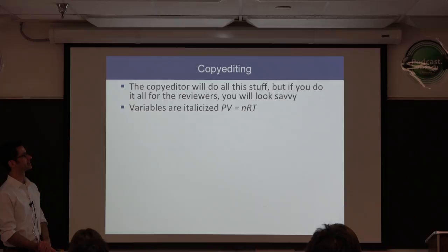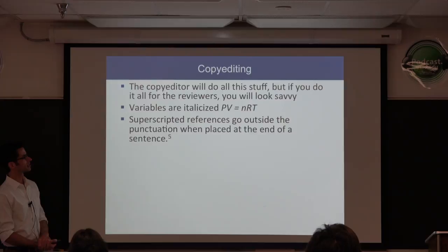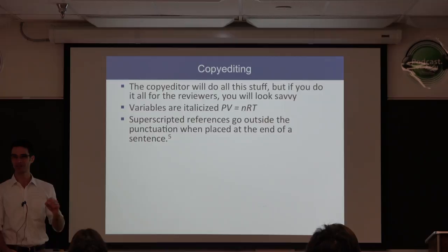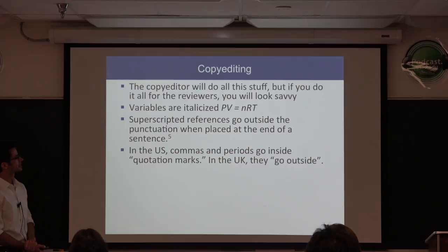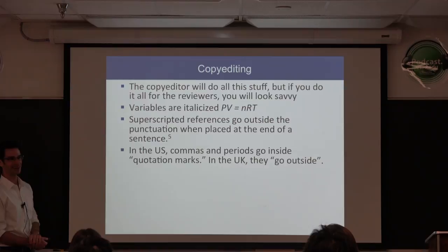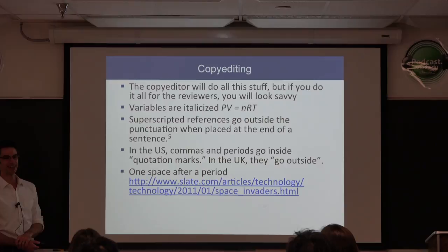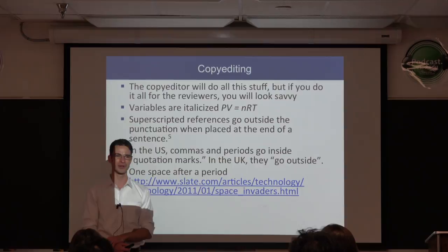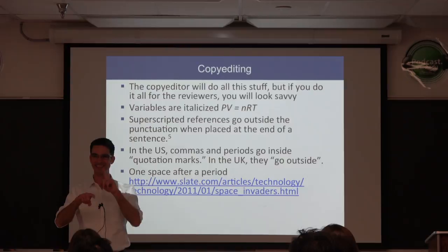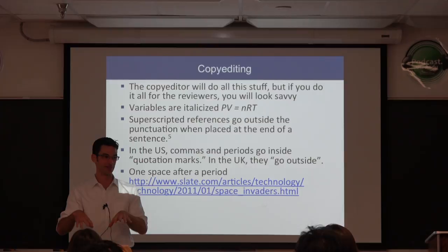Variables are italicized, but subscripts and superscripts are not. Superscripted references go outside the punctuation at the end of a sentence. In the US, commas and periods go inside quotation marks; in the UK they go outside. One space after a period — two spaces came from the typewriter era. Use Arial or other sans-serif fonts in your figures. Serif fonts make figures look like they were made in 1850 and add too much fine detail. Use bigger fonts than you think you'll need.